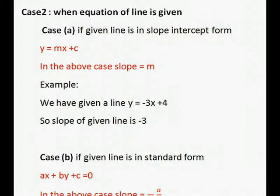Now second subcase (b): if given line of equation is in standard form Ax plus By plus c equals 0, in this case slope is equal to minus A by B.